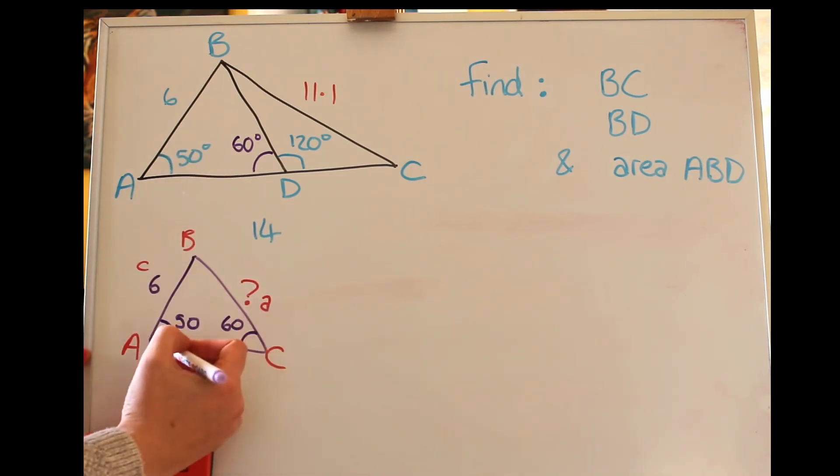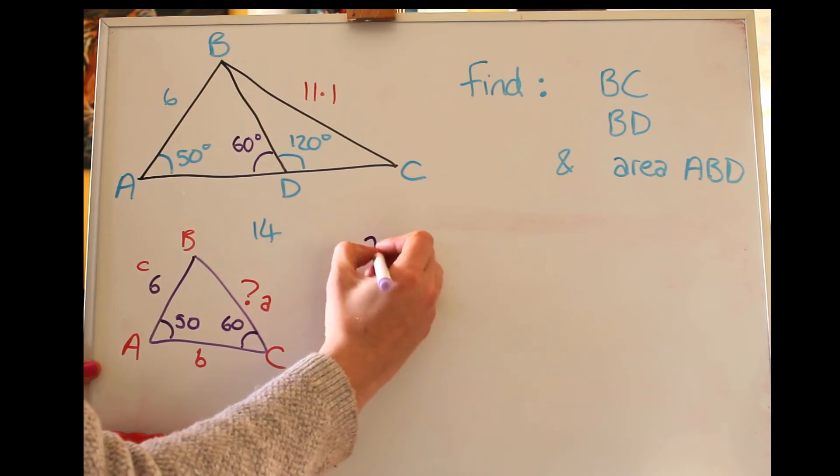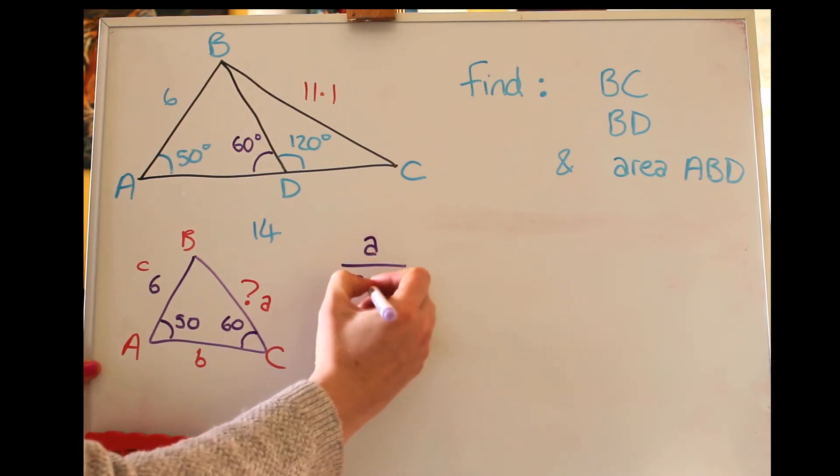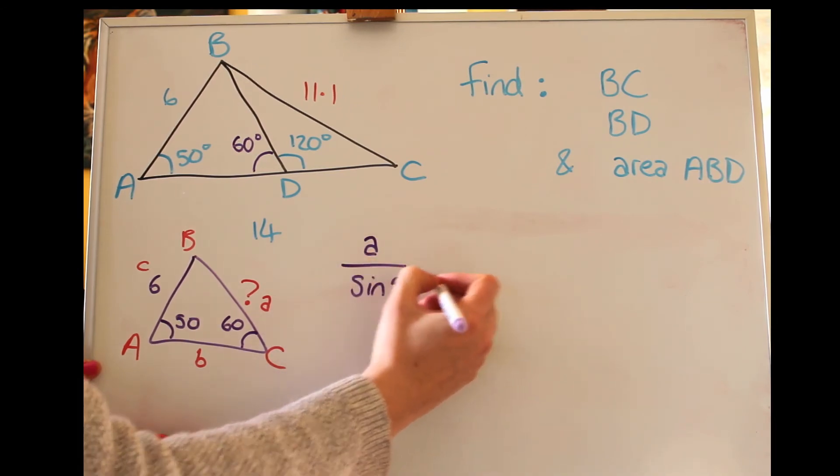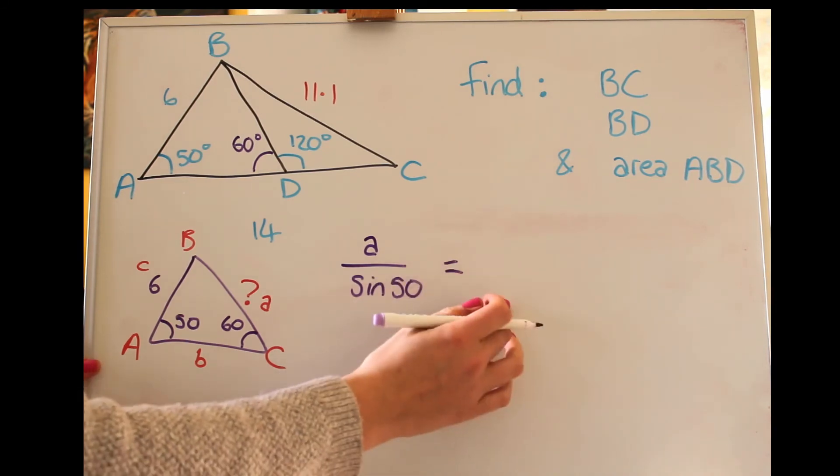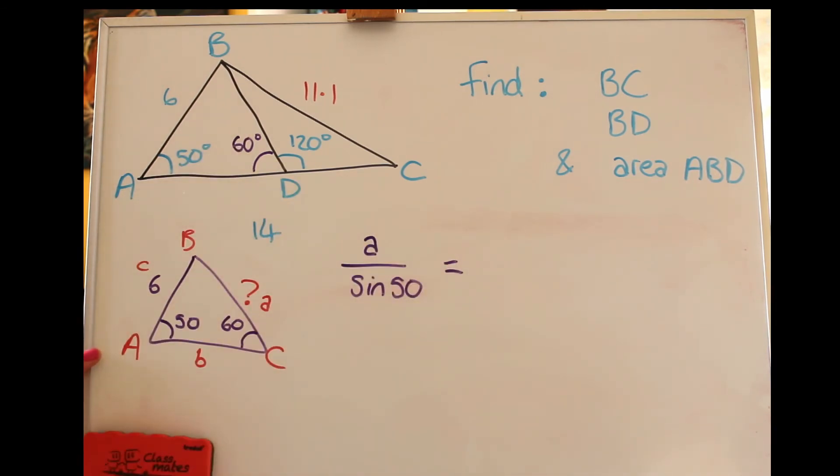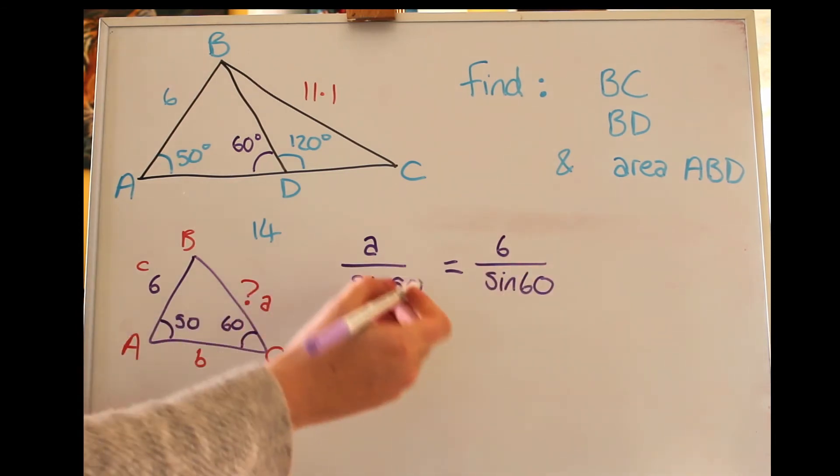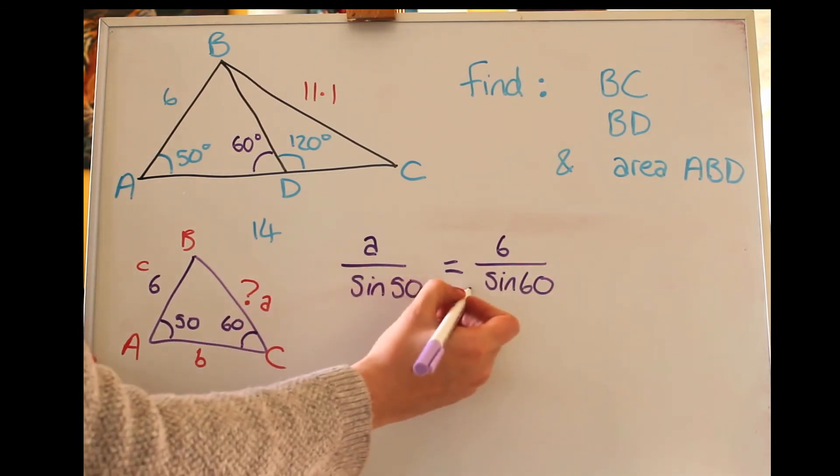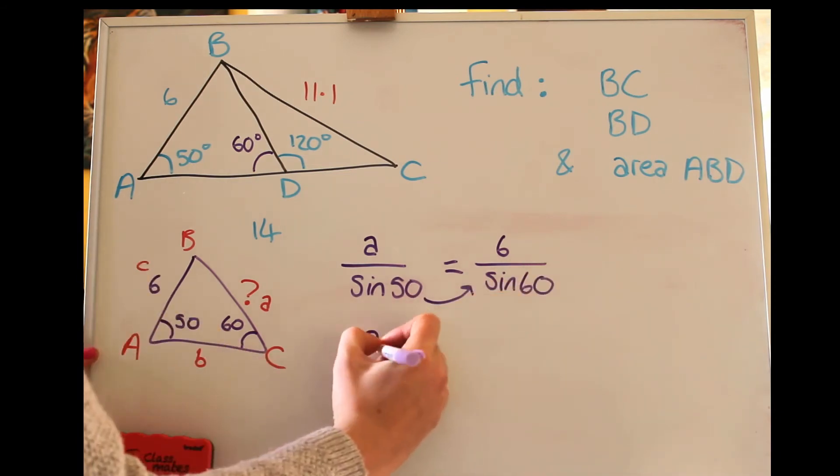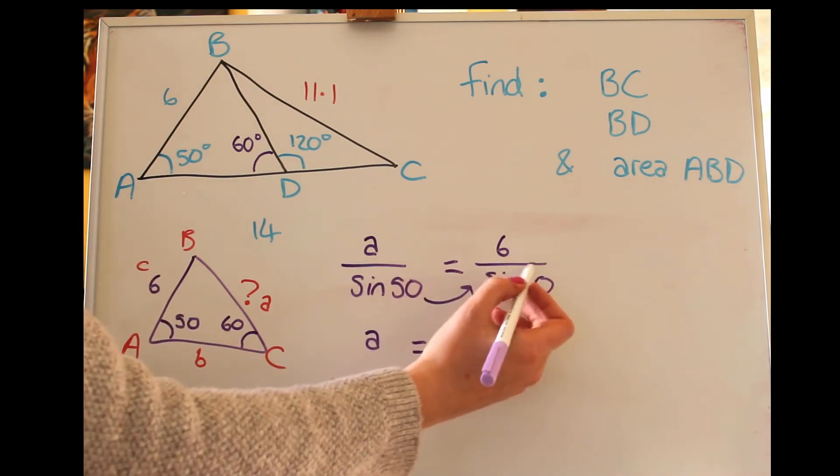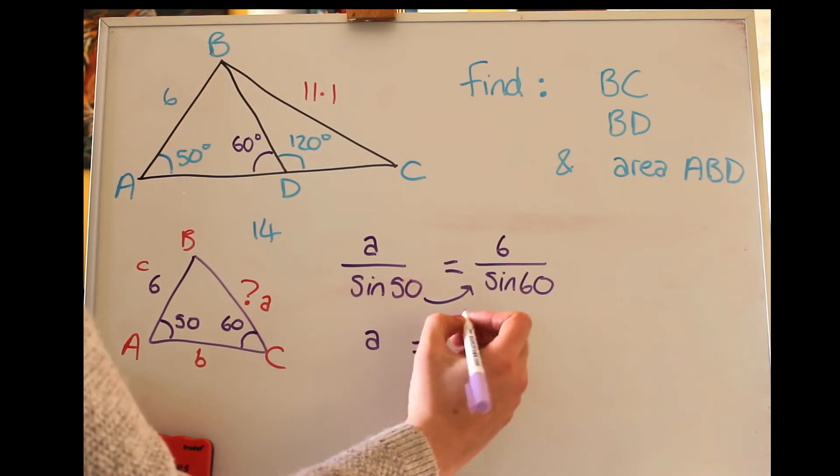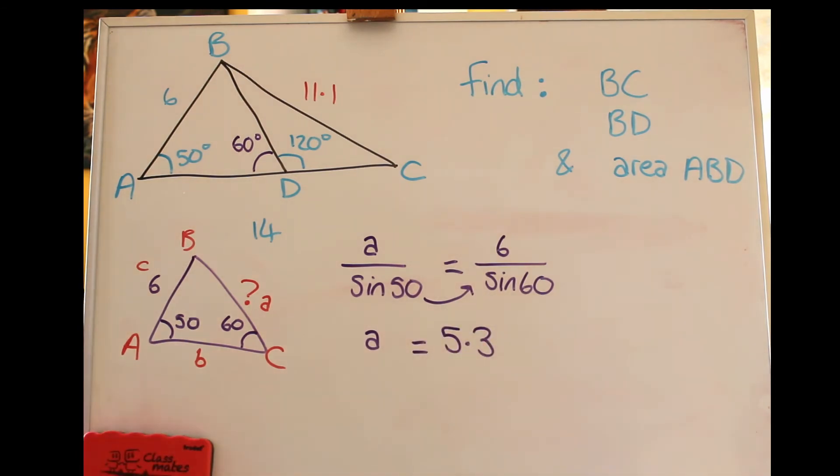And remember that when I write the sine rule I put the unknown thing that I'm trying to find on the top, so I'm going to do a over sine A here. A is the thing we're trying to find and we can do sine of 50 equals, and we only need one other bit of the sine rule, and it looks like the c's are the bits that we've got, so 6 over sine 60. And like before I'm going to multiply that denominator up to that side, so that lot multiplied by sine 50, and I get 5.3.